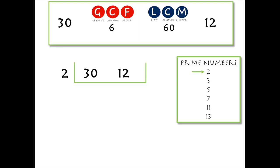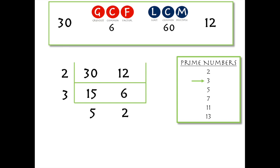We start at two: does two go into both 30 and 12? Yes. Two goes into 30 fifteen times and into 12 six times. Now with our new numbers 15 and 6: does two go into both? No. How about three? Yes. We draw another line, write down three. Three goes into 15 five times and into 6 two times. Our new numbers are five and two — both prime with no common factors, so we're finished.